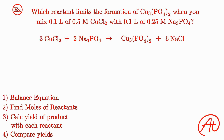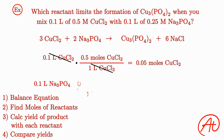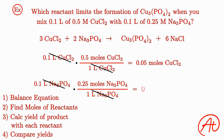Next, we have to find out how many moles we have of each reactant. For CuCl2, we have 0.1 liters of 0.5 molar solution. Molarity has units of moles per liter, so we multiply these two numbers to get 0.05 moles of CuCl2. Then for sodium phosphate, we have 0.1 liters of 0.25 molar solution, so we only have 0.025 moles of Na3PO4.